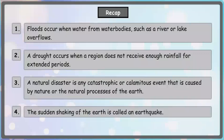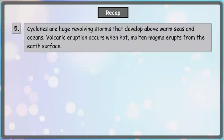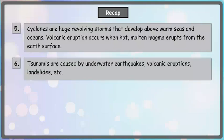The sudden shaking of the earth is called an earthquake. Cyclones are huge revolving storms that develop above warm seas and oceans. Volcanic eruptions occur when hot molten magma erupts from the earth's surface. Tsunamis are caused by underwater earthquakes, volcanic eruptions, landslides, etc.